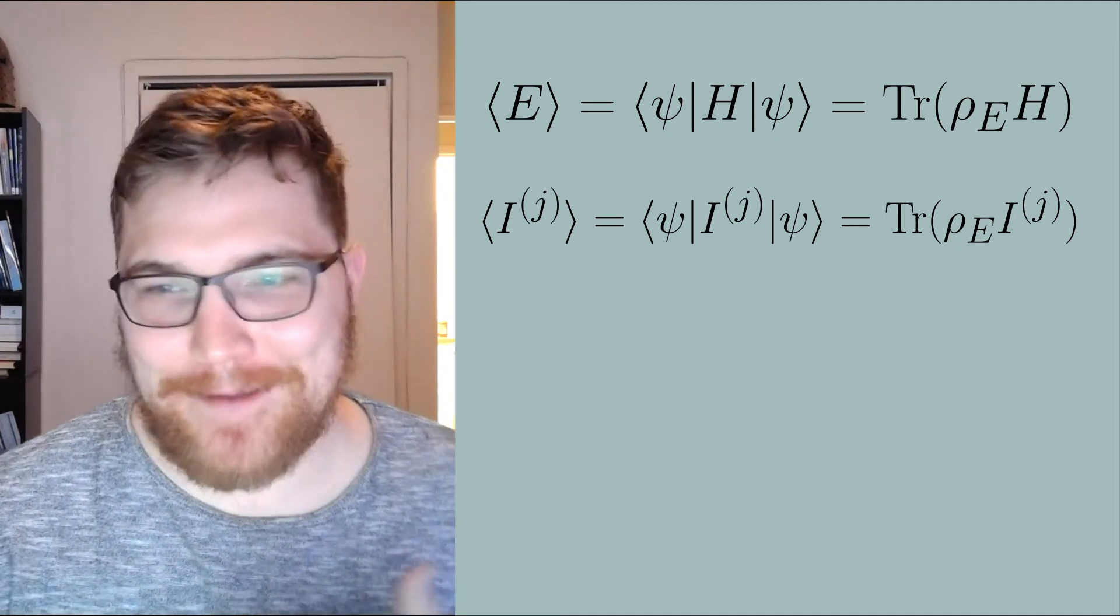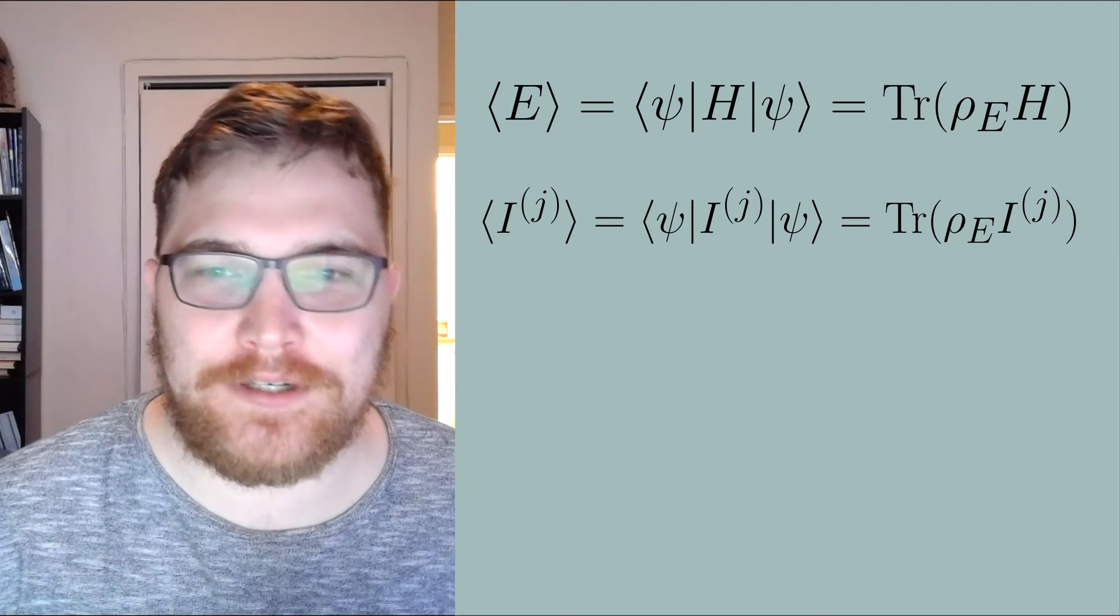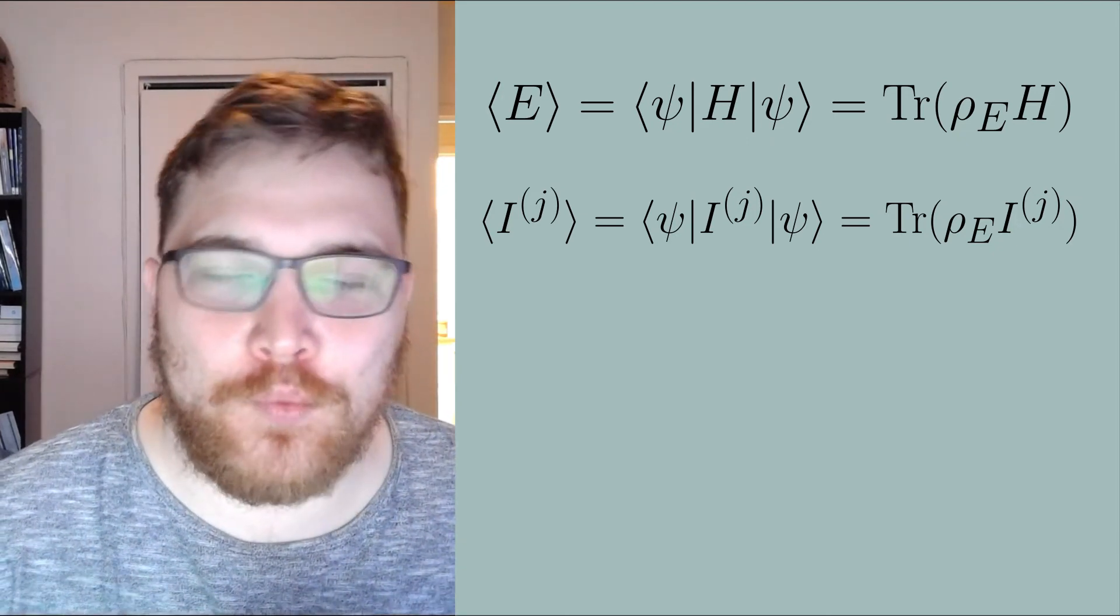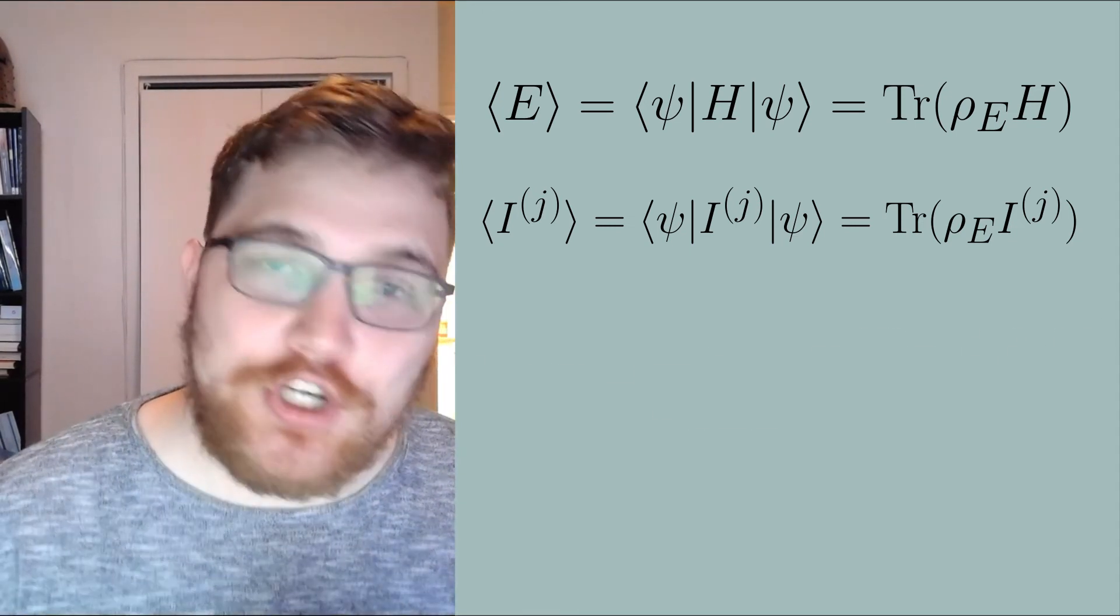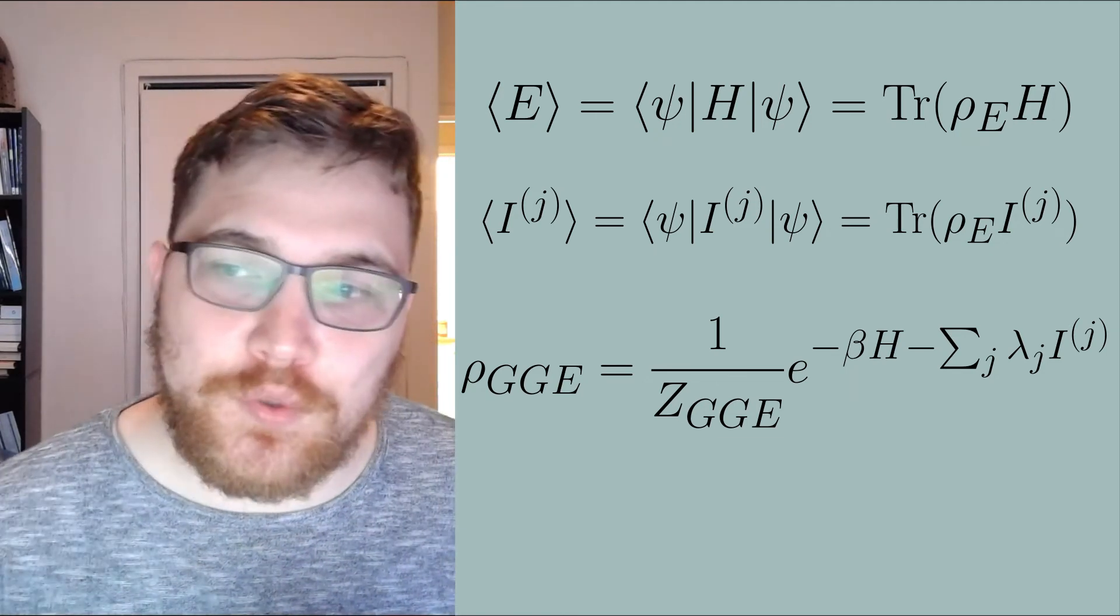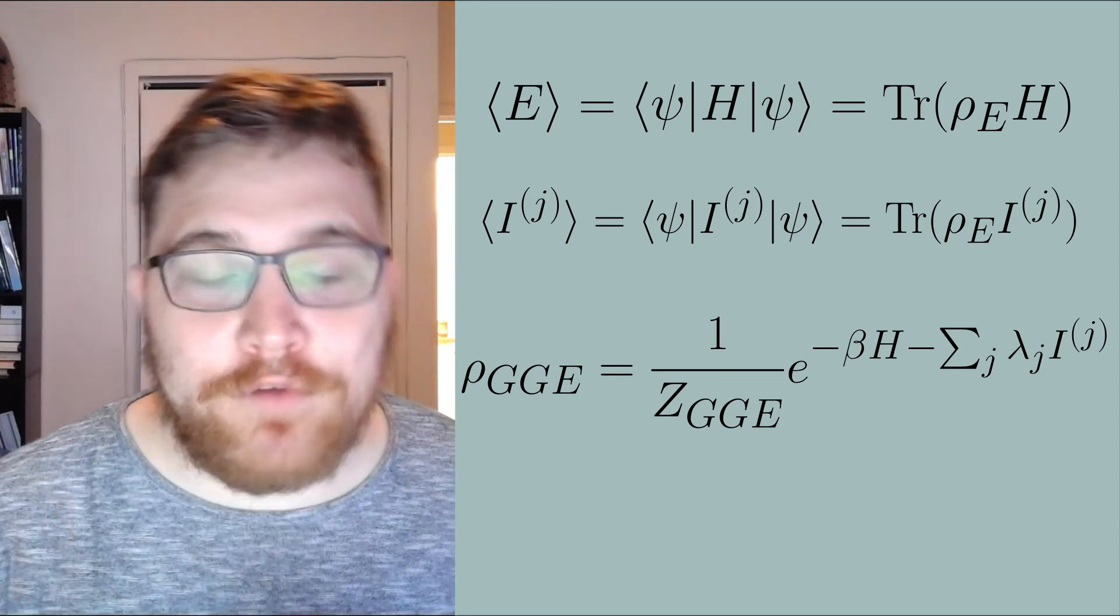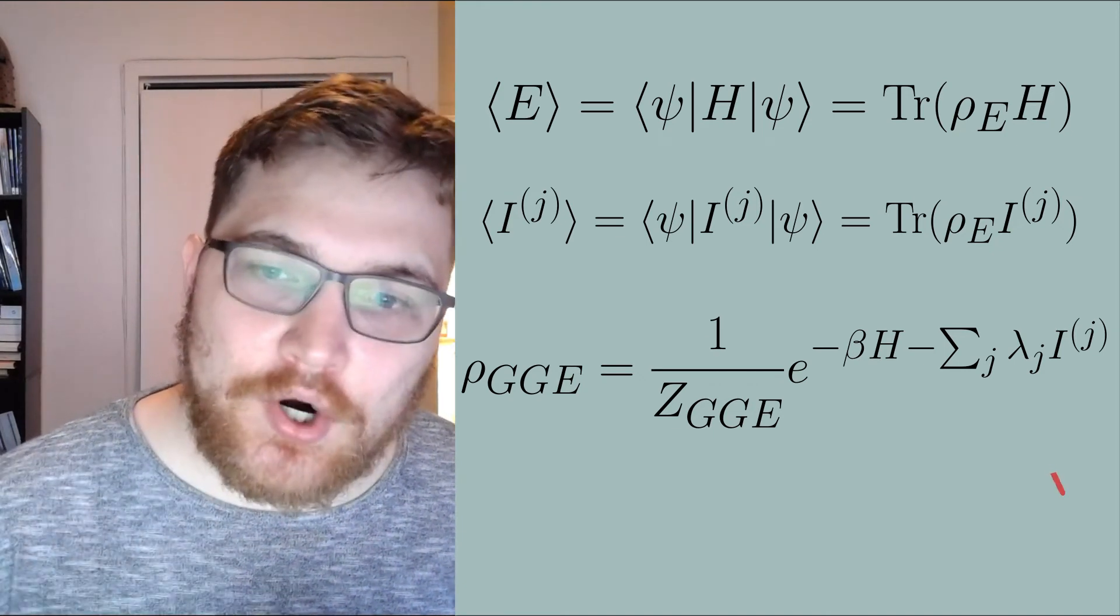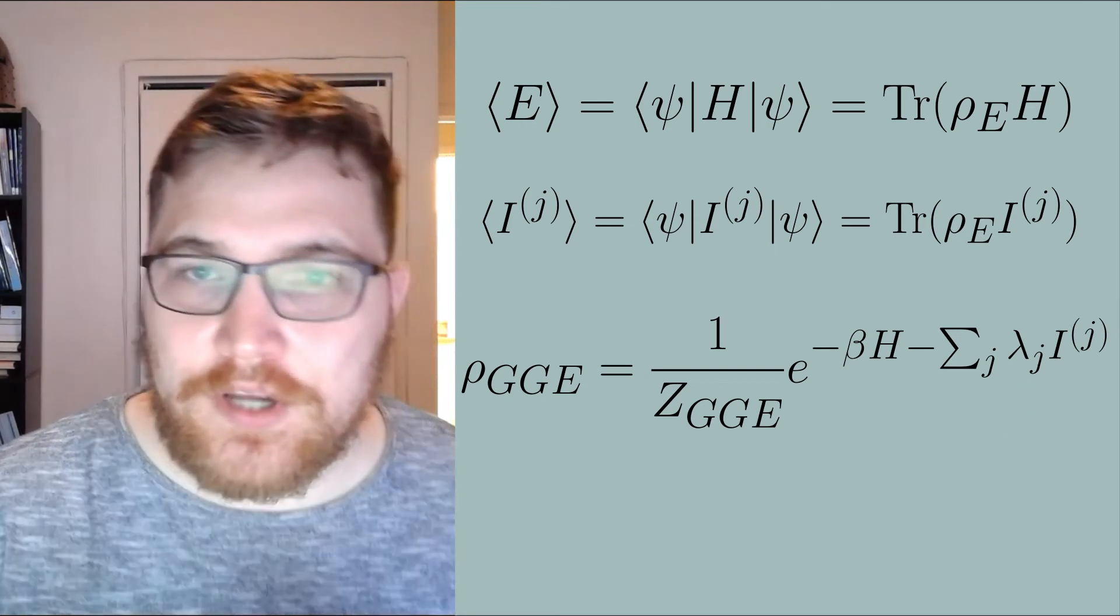We know that our equilibrium state must also obey the following expectation values. So this looks like a maximum entropy problem, right? If we look for the most unbiased distribution to predict equilibrium, the equilibrium ensemble would look something like the following expression where the GGE here stands for the generalized Gibbs ensemble. In the future we will cover this ensemble in more detail and even show examples of its use, but for now we can just say that the Lagrange multipliers lambda subscript j are determined in such a way that our ensemble has all of the correct expectation values for all of the integrals of motion.